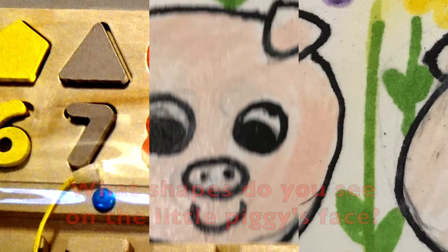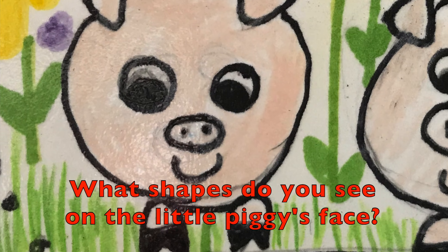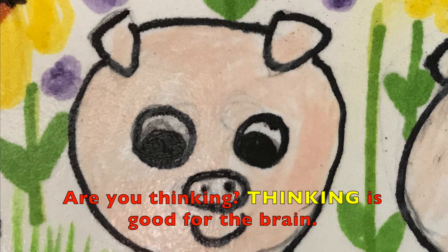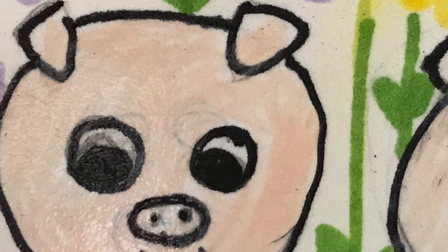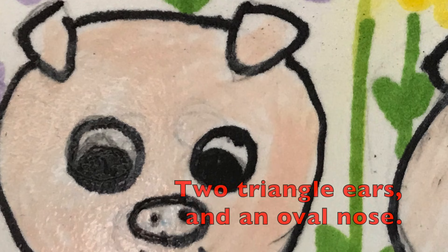A brown rectangle. So boys and girls, what shapes do you see on the little piggy's face? Are you thinking? Thinking is good for the brain. Two round eyes, two oval pupils, two triangle ears, and an oval nose.